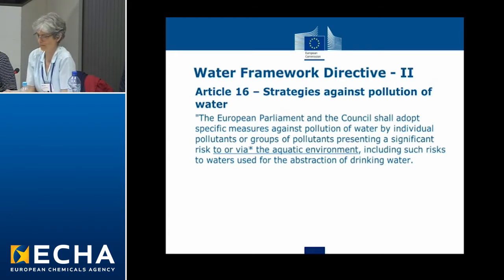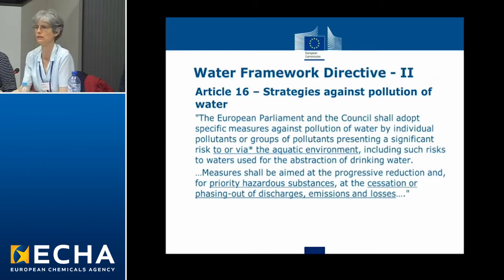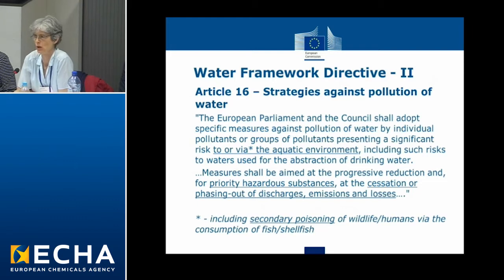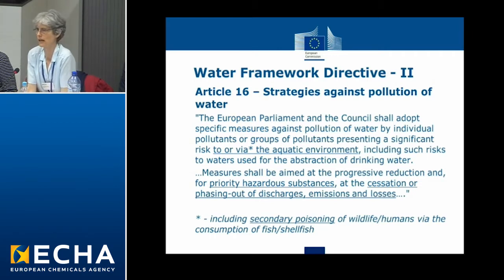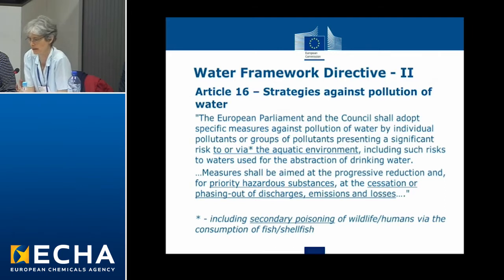Measures shall be aimed at the progressive reduction, and for priority hazardous substances — which is a subset of the priority substances — at the cessation and phasing out of discharges, emissions and losses. It's also secondary poisoning of wildlife and humans via the consumption of fish and shellfish that count. Article 16 includes a lot of detail about how we should go about identifying priority substances. It refers to using risk assessments from other legislation, which include, of course, REACH. And it also refers to doing a simplified risk assessment based on a risk ratio of the exposure and the hazard.